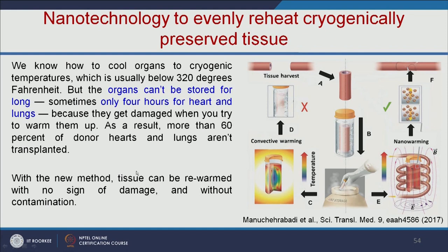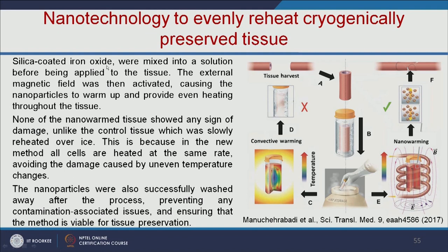Nanotechnology can also be used to preserve tissue. Usually organs are stored at 320 degrees Fahrenheit, but the organs cannot be stored for long — for example, heart or lungs can only be stored for 4 hours because they get damaged when warmed up. Due to this, more than 60% of donor hearts and lungs are not transplanted. With a new method using silica-coated iron oxide nanoparticles applied to the tissue, an external magnetic field is activated, causing the nanoparticles to warm up and provide even heating throughout the tissue. None of the nanowarmed tissue showed any sign of damage, unlike control tissue slowly reheated over ice. These nanoparticles can be washed away during the process, preventing contamination and ensuring this method is viable for tissue preservation.